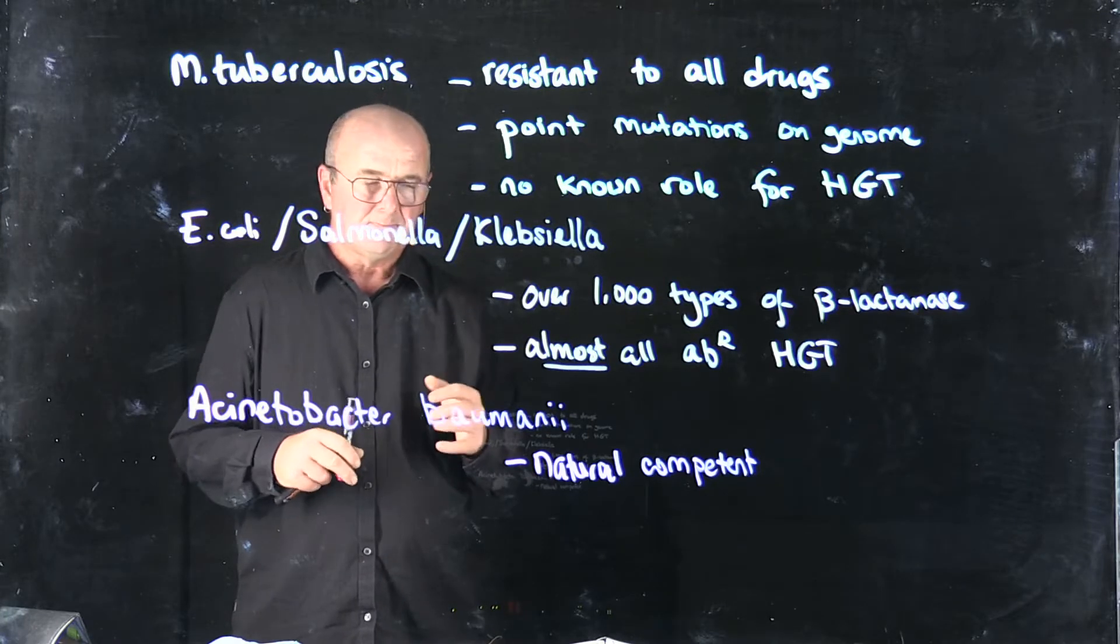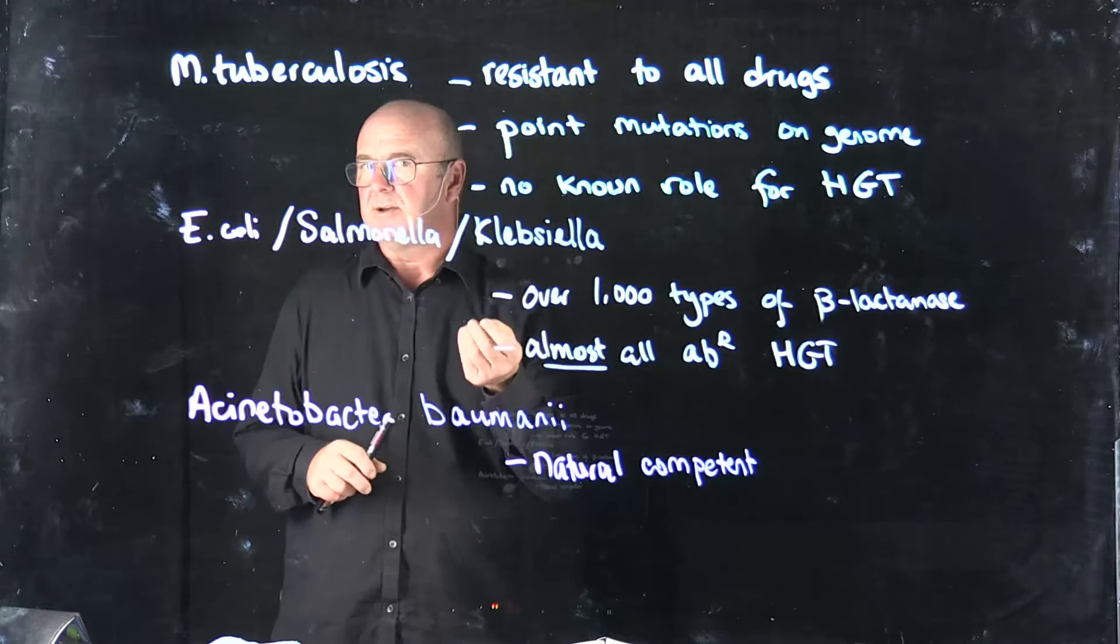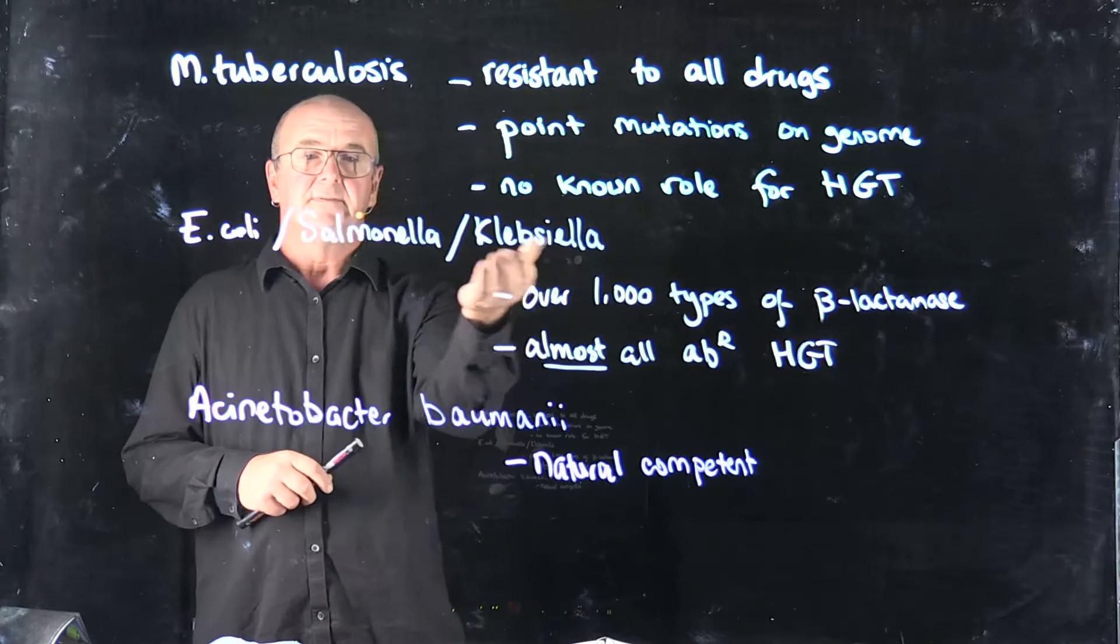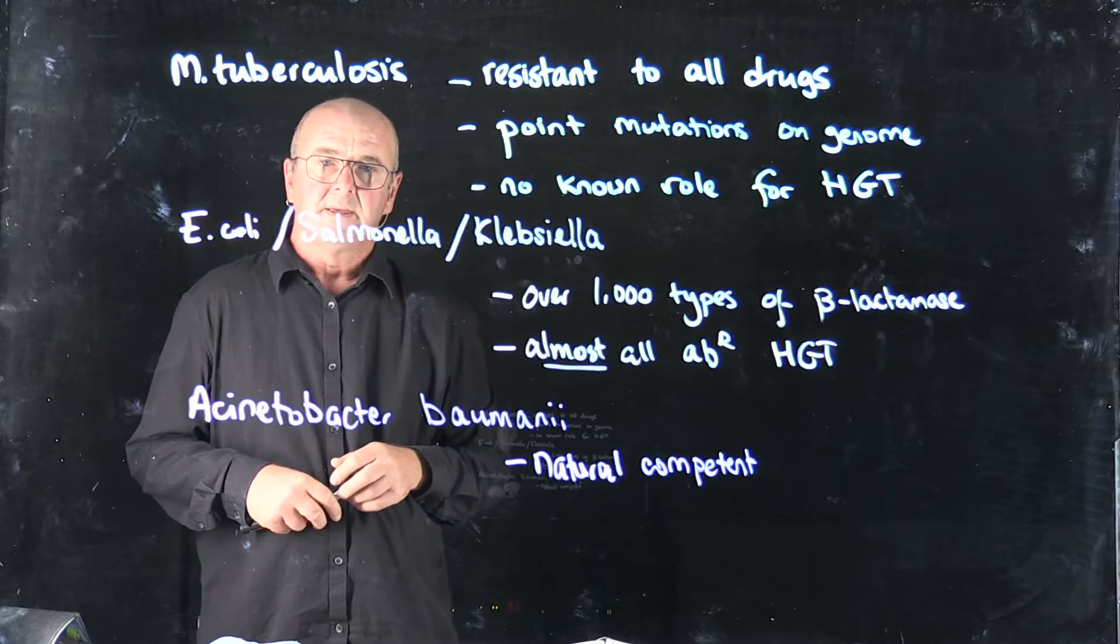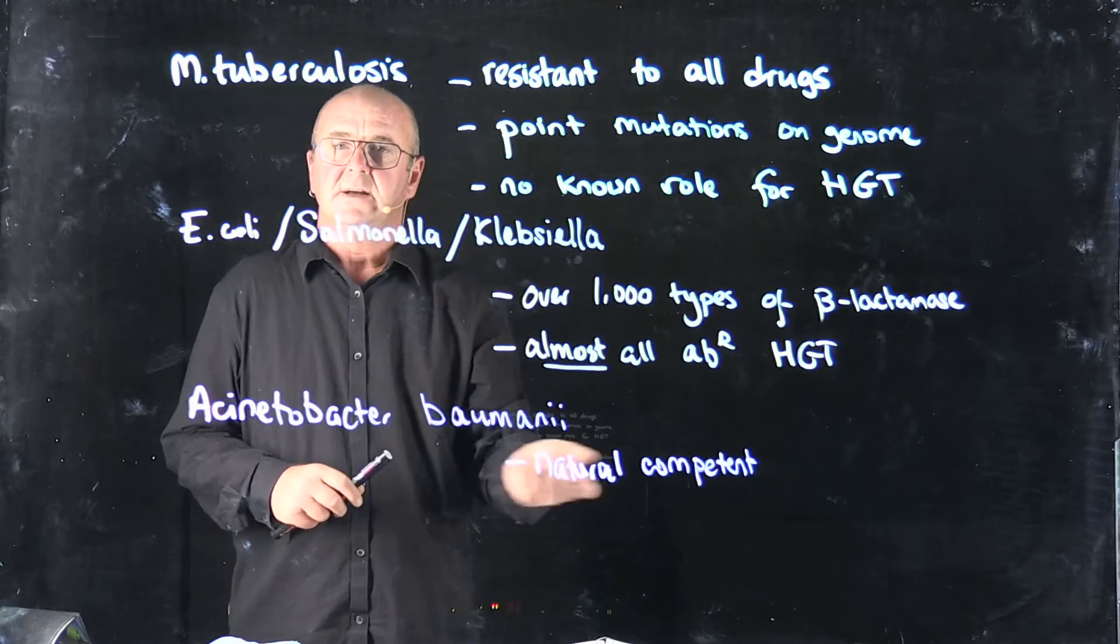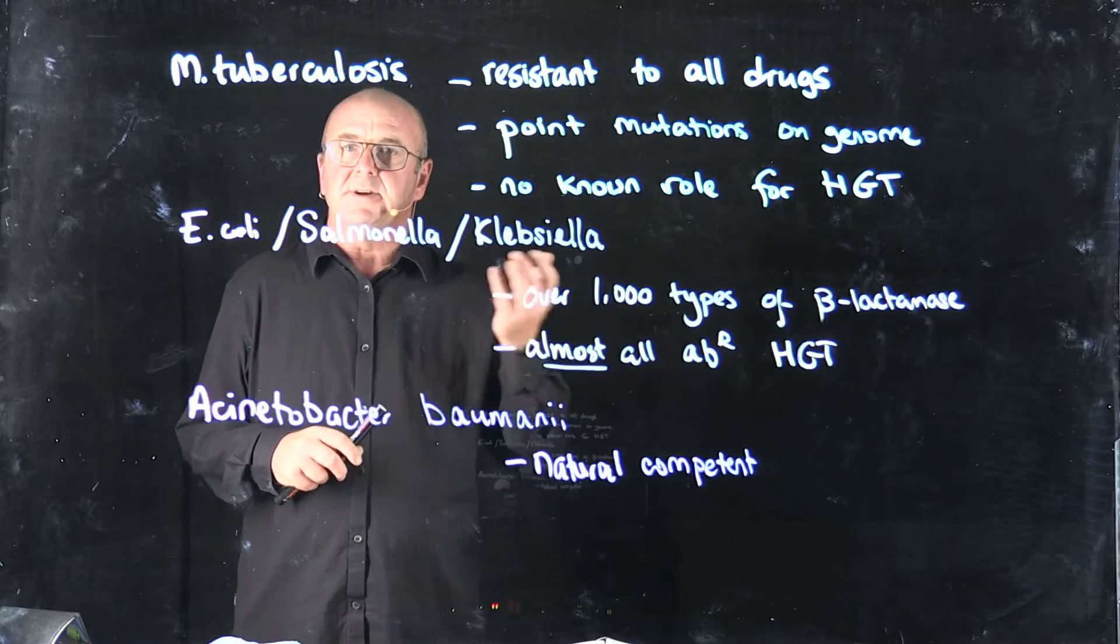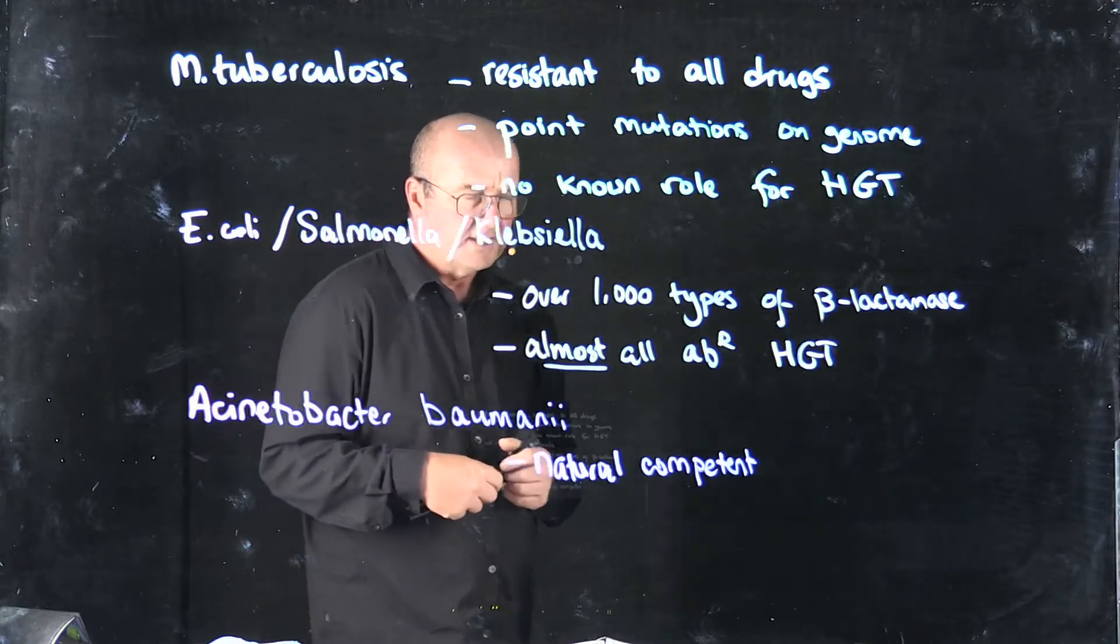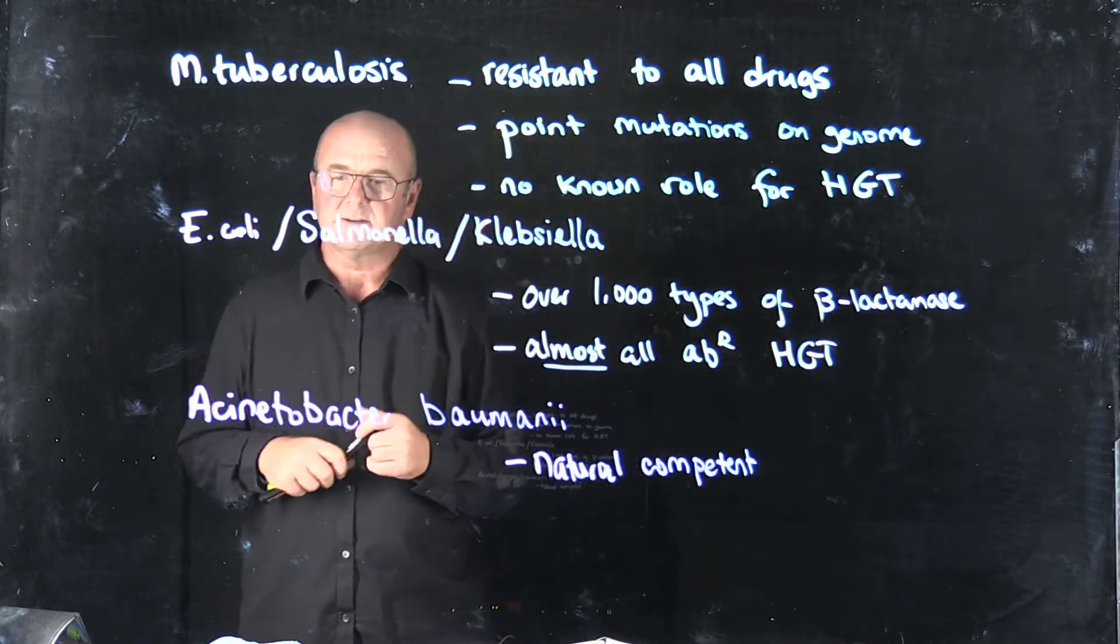It doesn't care. It may take up that DNA normally to use as a food source, but if that DNA encodes an antibiotic resistance from some other bacteria, and that antibiotic resistance is useful, then Acinetobacter will either keep it as a plasmid or integrate it into its chromosome, express those genes, and now all of a sudden, it's resistant to bacteria.